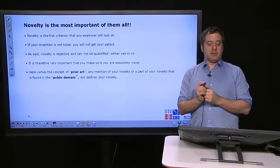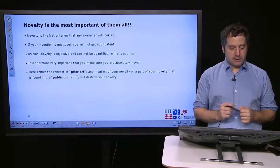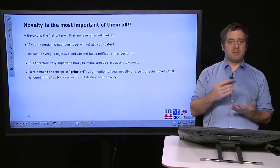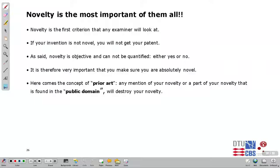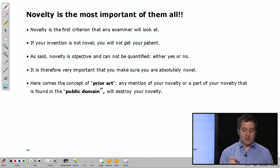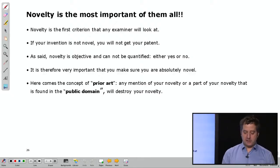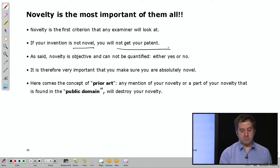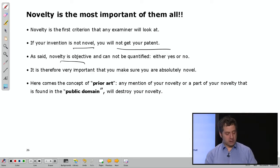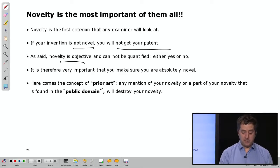Novelty is the most important of them all. That's what I like to say because it's the first criterion. If I have no novelty in my invention, then all the other house of cards will fall. We need to have novelty. Novelty is the first criterion that an examiner will look at. If your invention is not novel, then you will not get your patent. Very clear. There's no way around that. Novelty is objective and cannot be quantified. It's either novel or not. It is therefore very important that you make sure that you are absolutely novel.